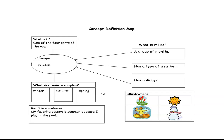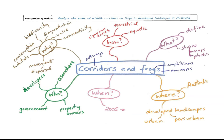Here is an example of a concept map at a higher level: analyzing the value of wildlife corridors on frogs and developed landscapes in Australia.